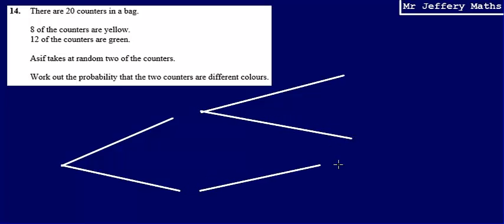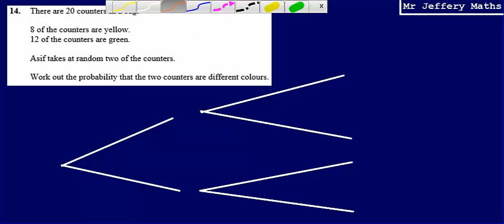Now the first thing to mention here is that if you take 2 counters at the same time, that's the same as if you were to take one counter and not replace it, then take another one. And that's important for our calculations.